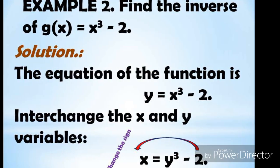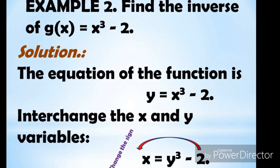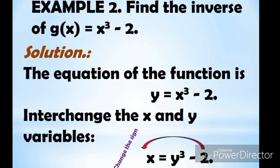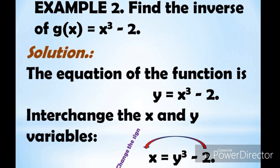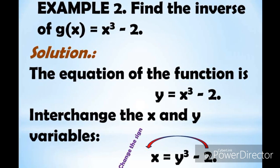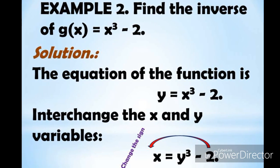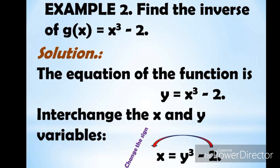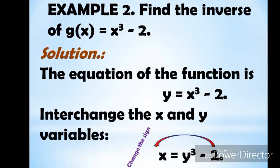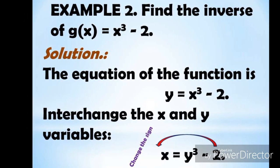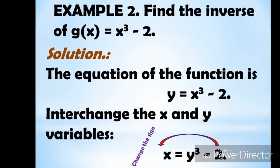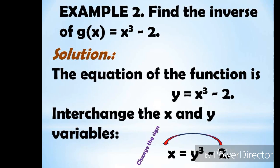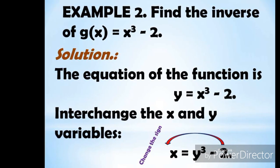The next example: find the inverse of g(x) = x³ − 2. Change g(x) to y, so the equation becomes y = x³ − 2. The second step is to interchange the x and y variables, so we have x = y³ − 2.